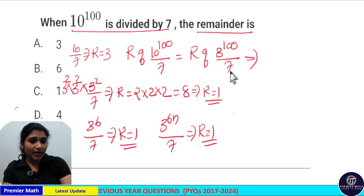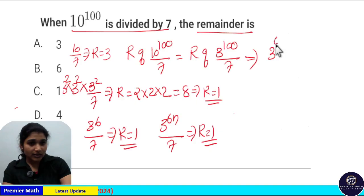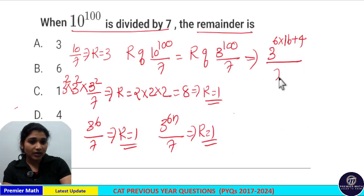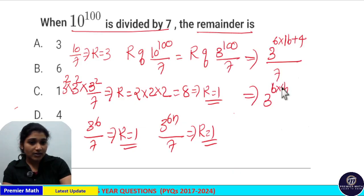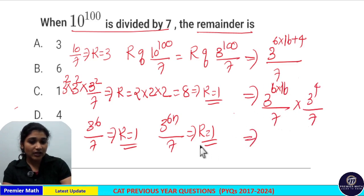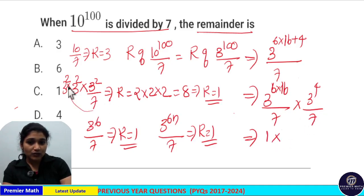Now write 3^100 divided by 7 in terms of 3^(6n). Here, 6 × 16 = 96, with a remaining exponent of 4. So 3^100 = 3^(6×16 + 4), which can be split as 3^(6×16) divided by 7, multiplied by 3^4 divided by 7. From this, 3^(6n) divided by 7 gives remainder 1.